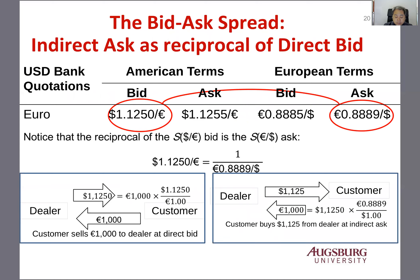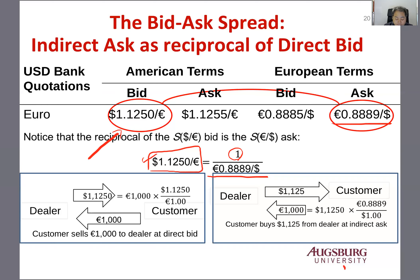The indirect ask price can be calculated by the reciprocal of the direct bid price, and they are basically the reciprocal of each other. So $1.125 per euro equals 1 over the ask price. Suppose the dealer pays this price to buy euro from the customer.